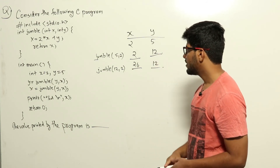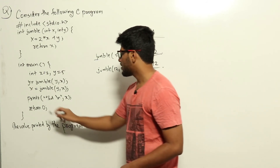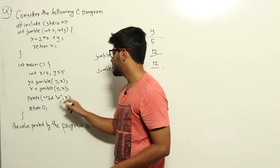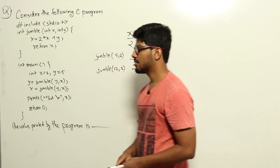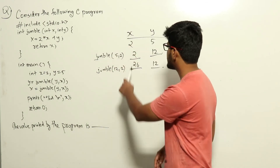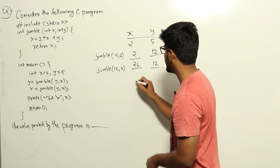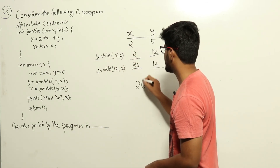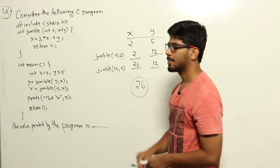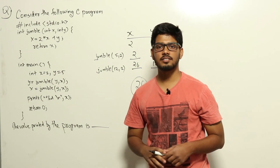Now look at the print statement: printf with %d x, meaning we are printing the value of x, which is clearly 26. So 26 is the answer.